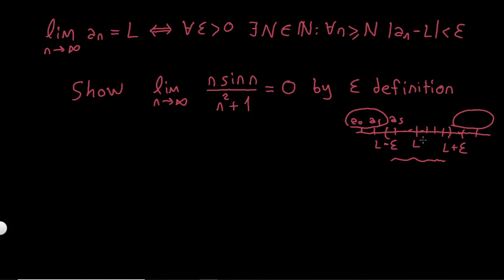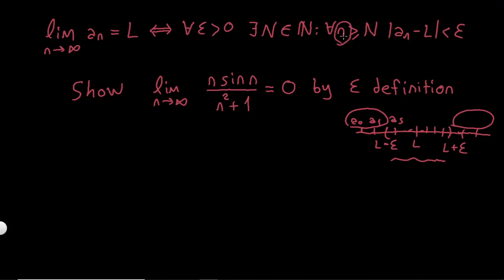So for each n greater or equal to capital N — because capital N is a specific number, for example 50 — this is saying that for each n greater or equal to 50, the term should be inside the epsilon neighborhood. That is what it means.